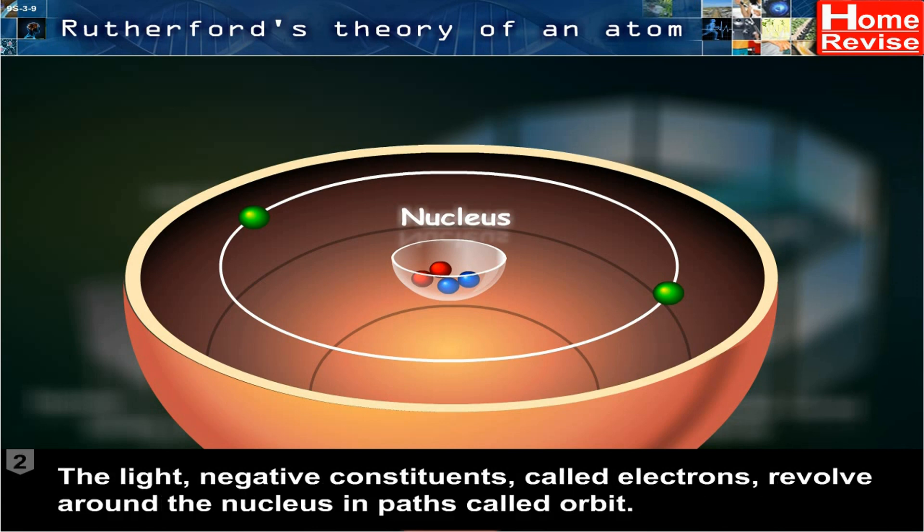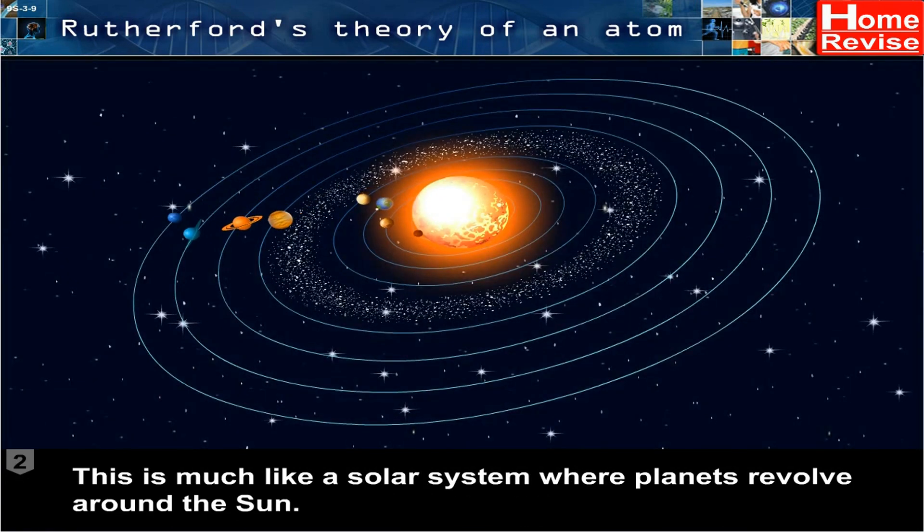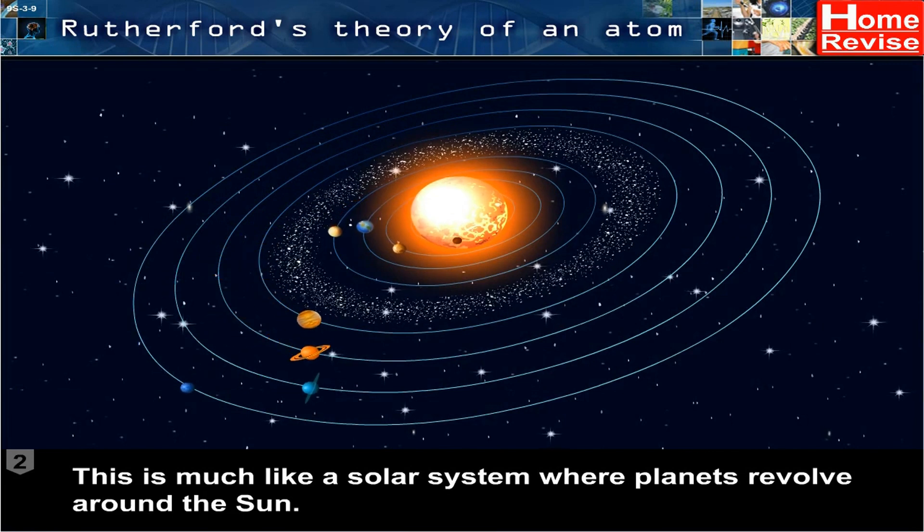The light, negative constituents, called electrons, revolve around the nucleus in paths called orbits. This is much like a solar system, where planets revolve around the sun.